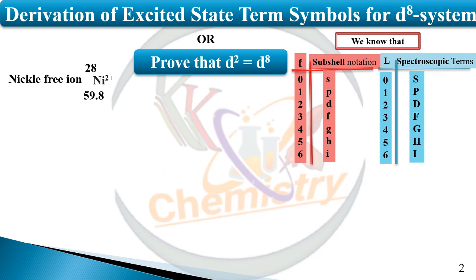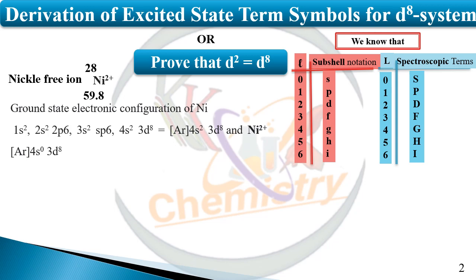The ligands are not attached to it, so we are not going to discuss the ligand field effect here — just the free ion of nickel. The ground state electronic configuration for nickel is 1s² 2s² 2p⁶ 3s² 3p⁶ 4s² 3d⁸. If two electrons are removed, we get the configuration 4s⁰ 3d⁸ for this particular nickel ion.